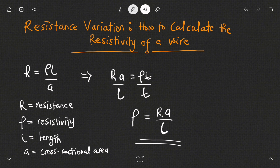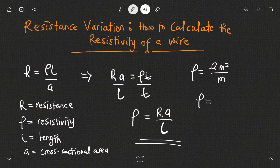Now note that from the formula, resistance is measured in ohms, area is in meters squared, and length is in meters. So one of the meters will cancel one of the meters at the top, and our resistivity has the unit of ohm meter.